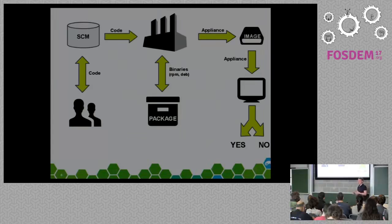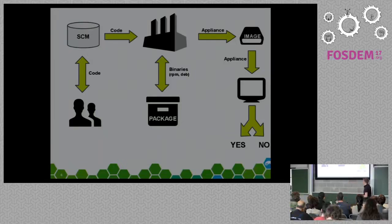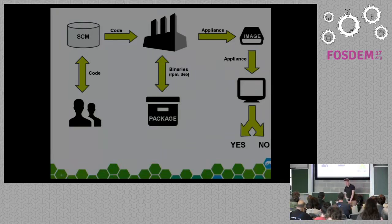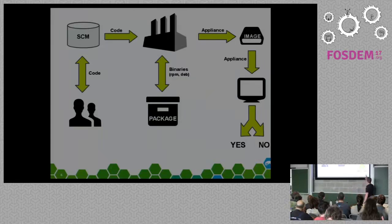All the packages are installed, it boots correctly, the services are running — and get some feedback in the end: yes it works or no it doesn't work anymore. So how can the build service and the tools that we use — for instance we use OpenQA to test the distributions — the full stack, how can it help?